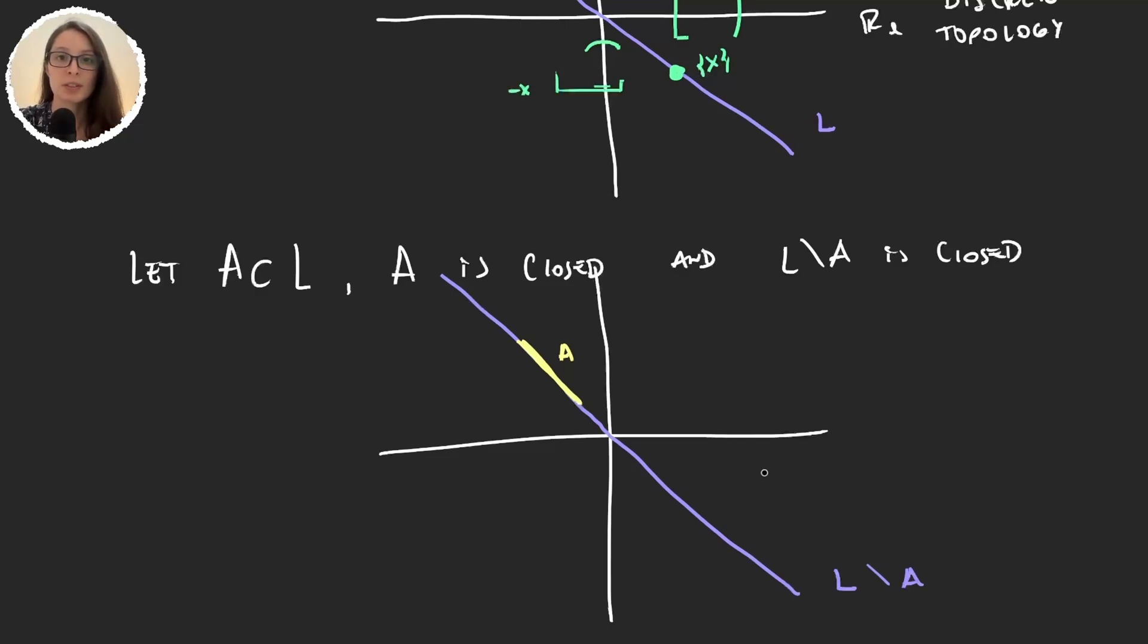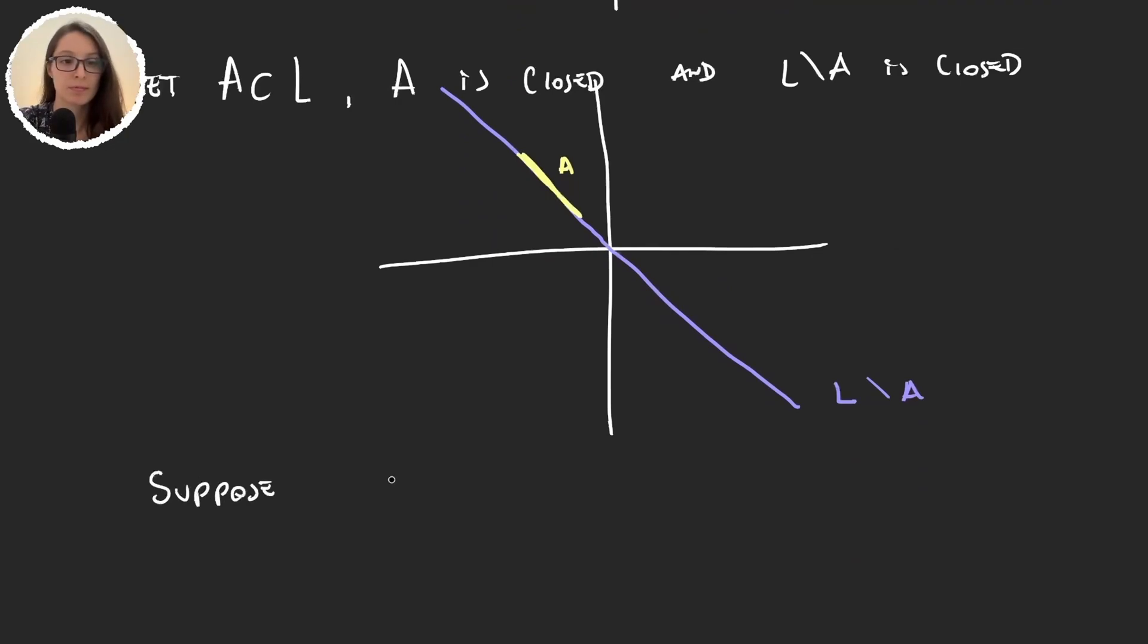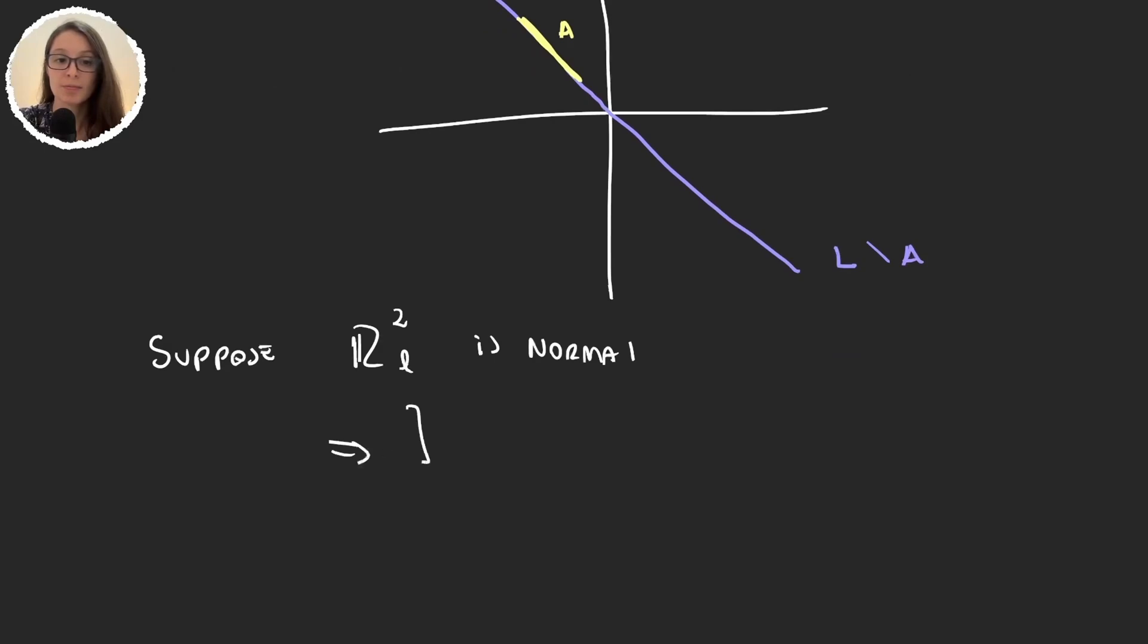So let's suppose that RL squared is normal. So because we have these closed subsets of RL squared that are disjoint, we know that there will exist, let's call them UA and VA, open sets such that they are disjoint.